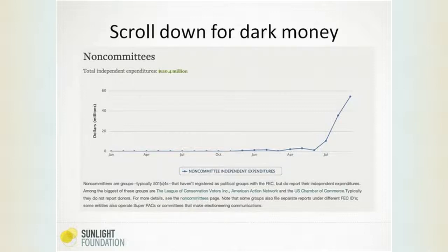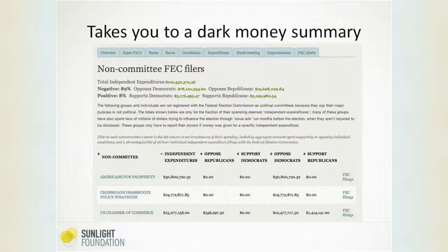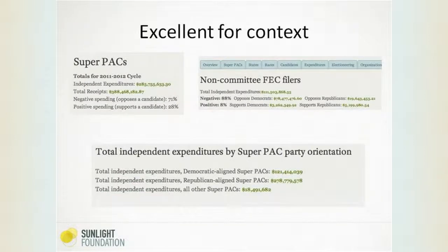There is a link at the bottom of this table highlighted in this box — 'noncommittees.' If you click on that, not only do you see this nice graphic illustration, you can go to a page that lists all the different groups, shows how much they've spent, what they've spent opposing or supporting different candidates of different parties, and you can get links to where they file at the Federal Election Commission. One of the key things I want to focus on is the context. With the super PACs, you can see how much they've spent on independent expenditures, how much is negative spending opposing a candidate — and we can see overwhelmingly it's negative. With those noncommittee FEC filers, the dark money groups like Crossroads GPS and other nonprofits, you can see they're even more negative than the super PACs.